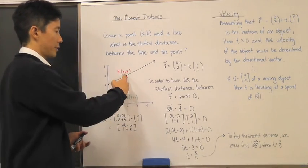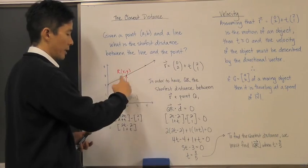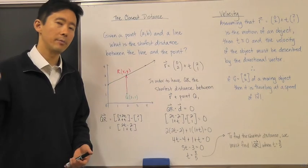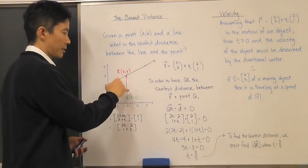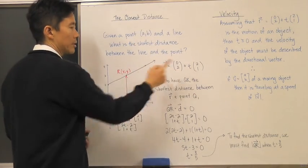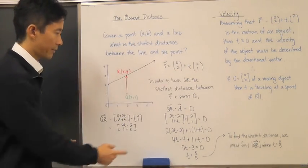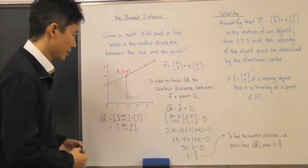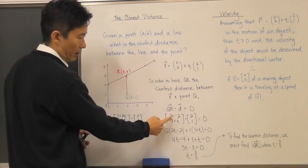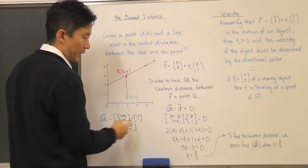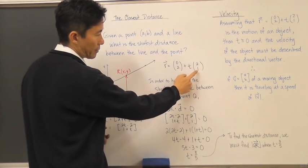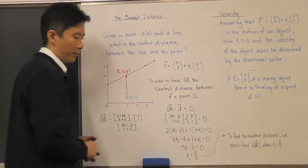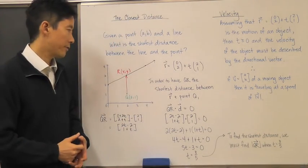That vector QR can be anything depending on the value of t, but we're looking for a particular value of t that forces QR to be perpendicular to the directional vector of the line. Setting the scalar product equal to zero: QR = (2t − 2, 1 + t) dotted with directional vector (2, 1) equals zero. Solving this gives t = 3/5.